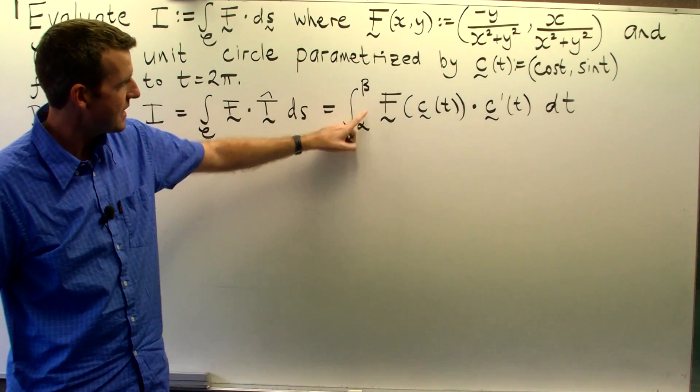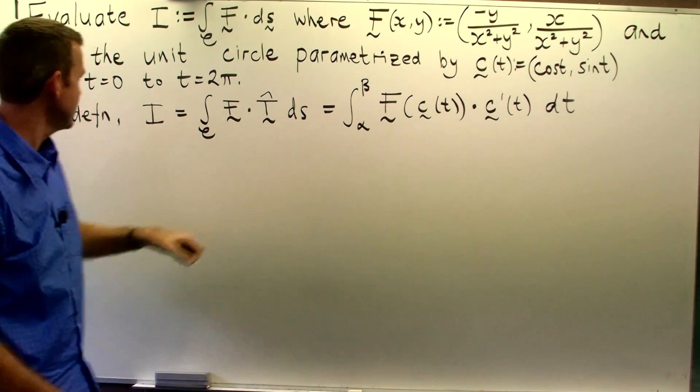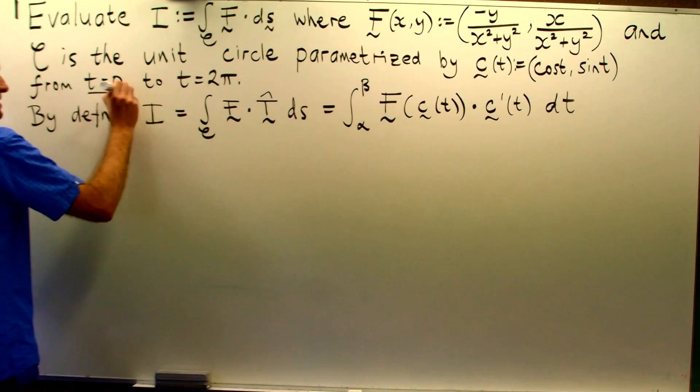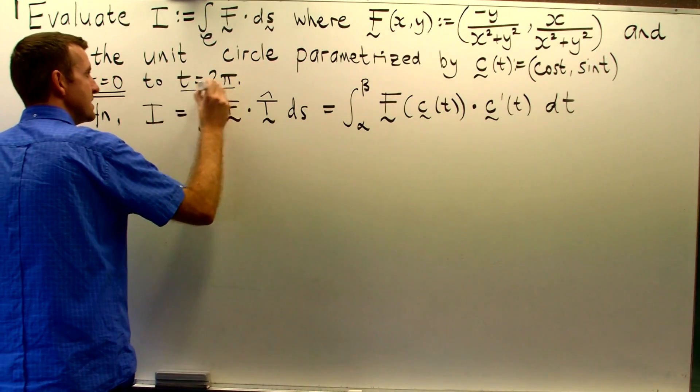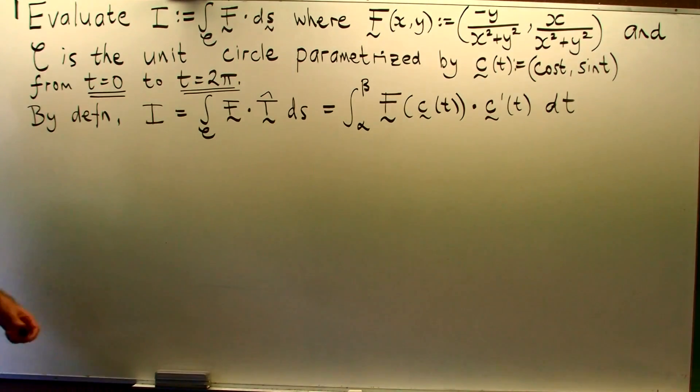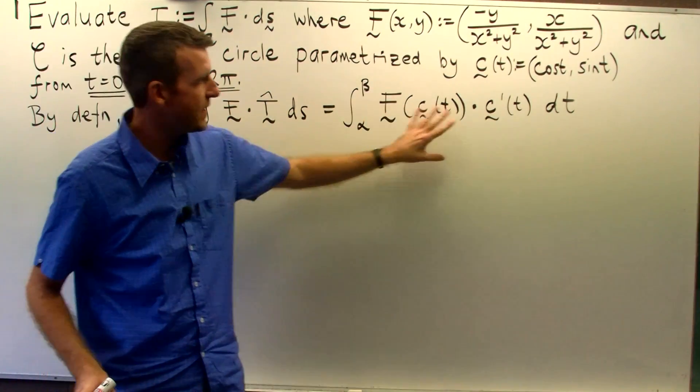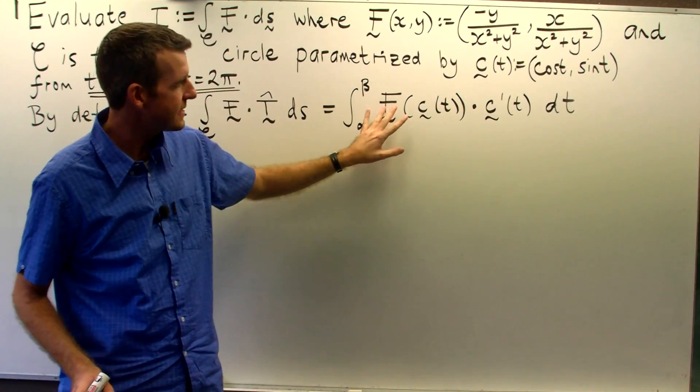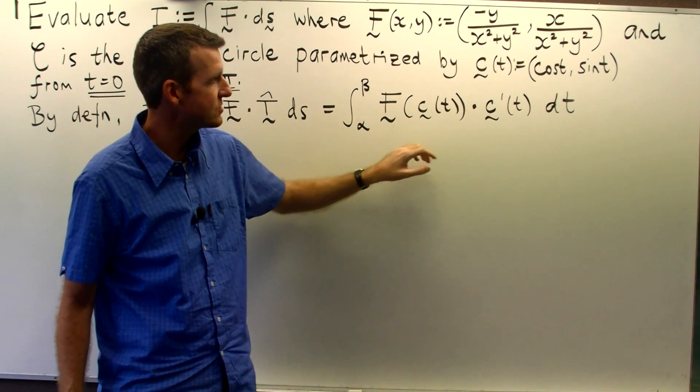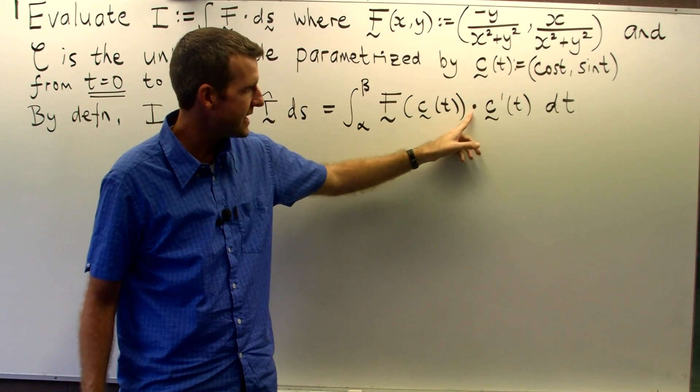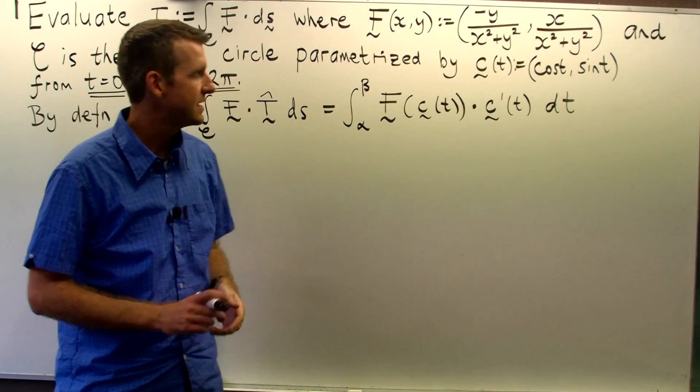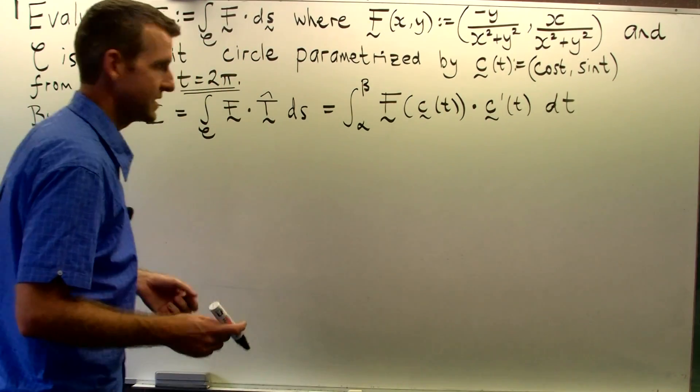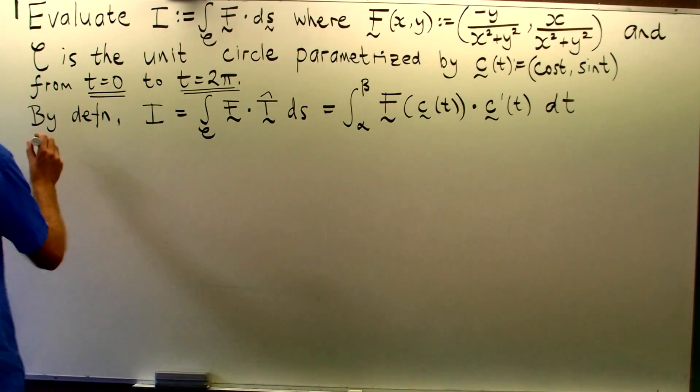And these lower and upper limits of integration are just, in this case, 0 and 2 pi. So we've got two parts to this problem. Evaluate big f along the parameterization and take the dot product with the derivative of the parameterization. Then integrate. So let's do that.